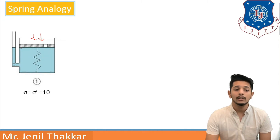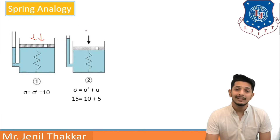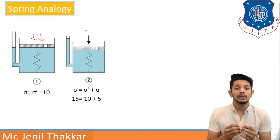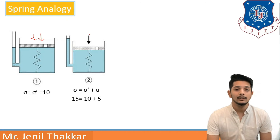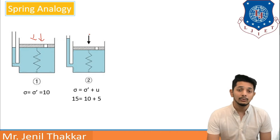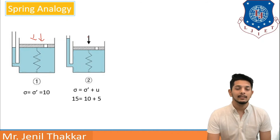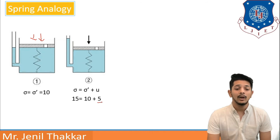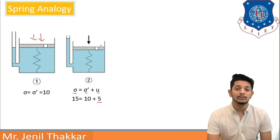If we increase the pressure on the piston — say we previously applied 10 units and now increase by 5 units more — the total external pressure becomes 15 units. Since the valve is closed, the extra 5 units will be taken by water. Pressure in water is increased to 5 units. We know this equation: total stress equals effective stress plus neutral stress. Neutral stress or pore water pressure is increased due to the closing of the valve.